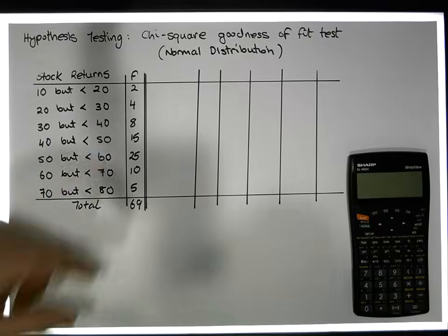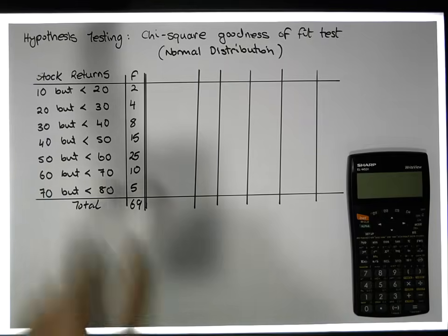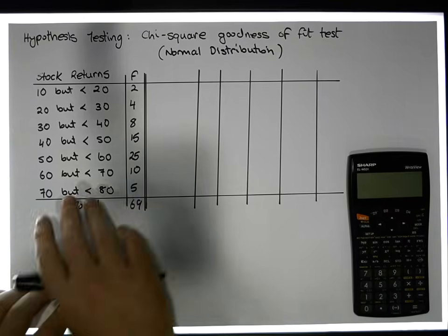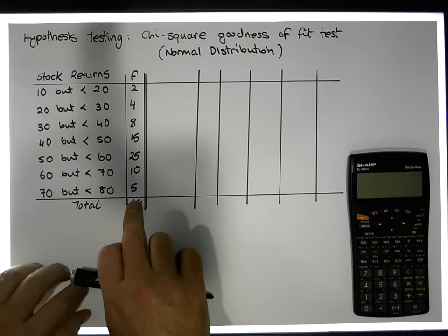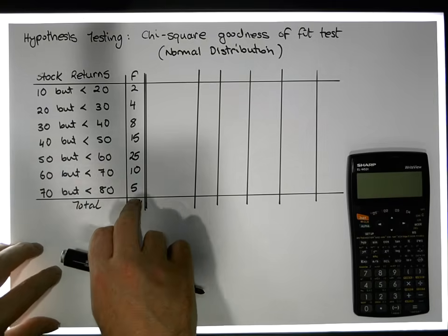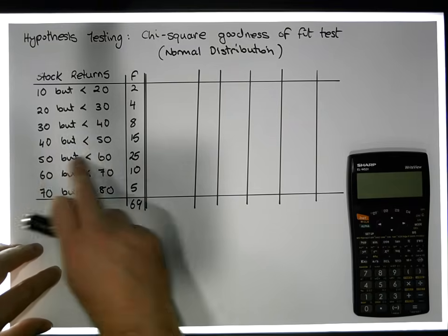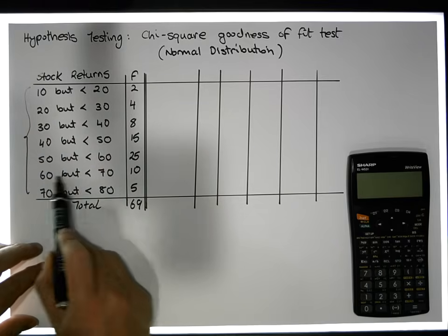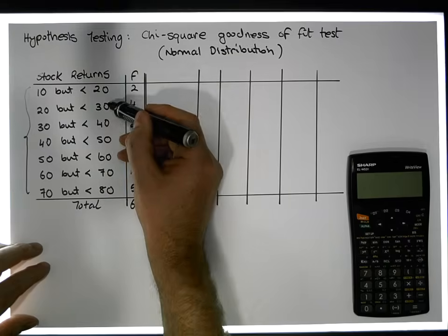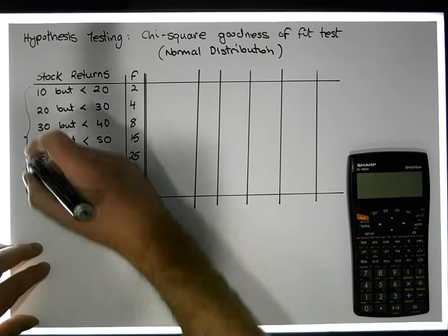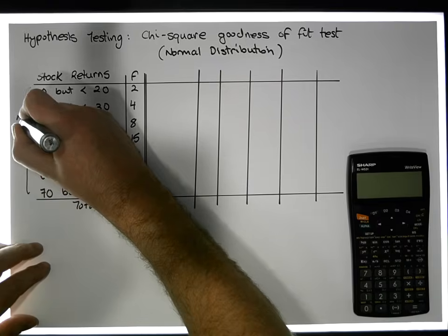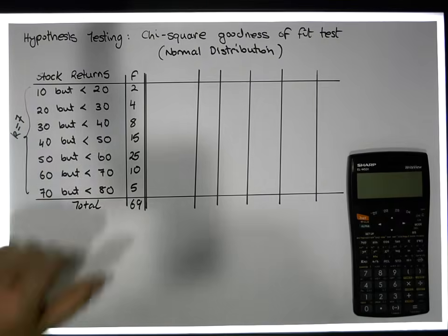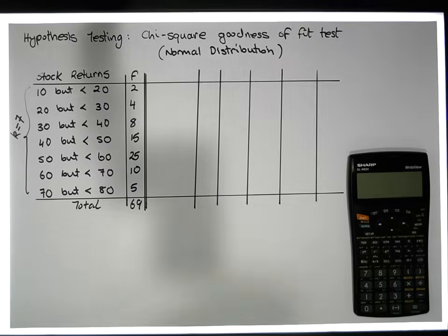These are obviously fictitious values — there's great fluctuation and great returns in certain cases, but they're fictitious, just to motivate this example. These are our observed frequencies. This particular variable has seven levels of measurement, so k equals 7. The variable is categorical in the sense that an observation can fall into any one of those seven categories.